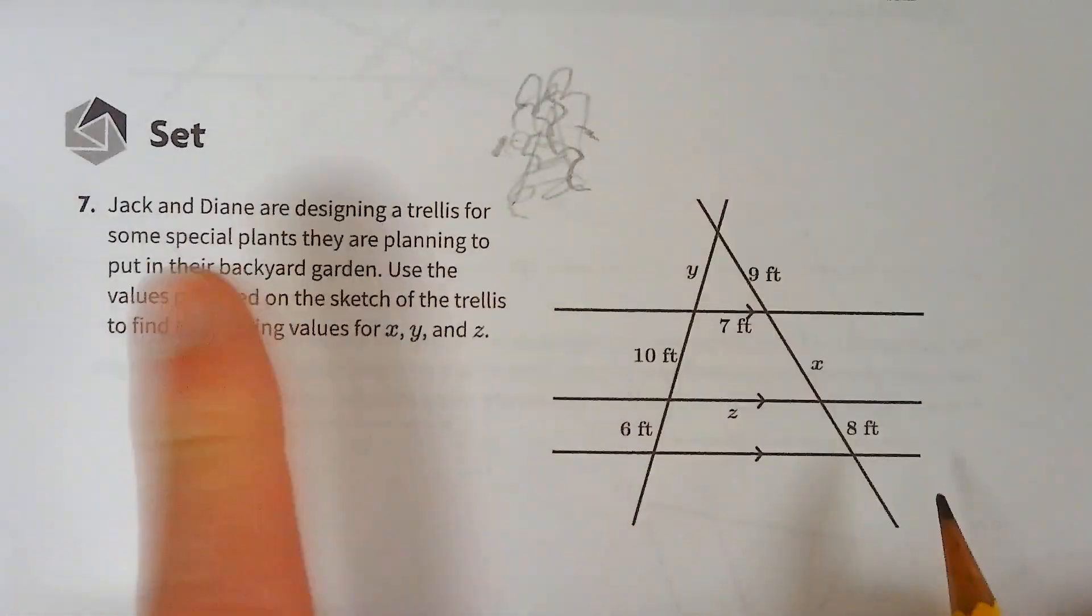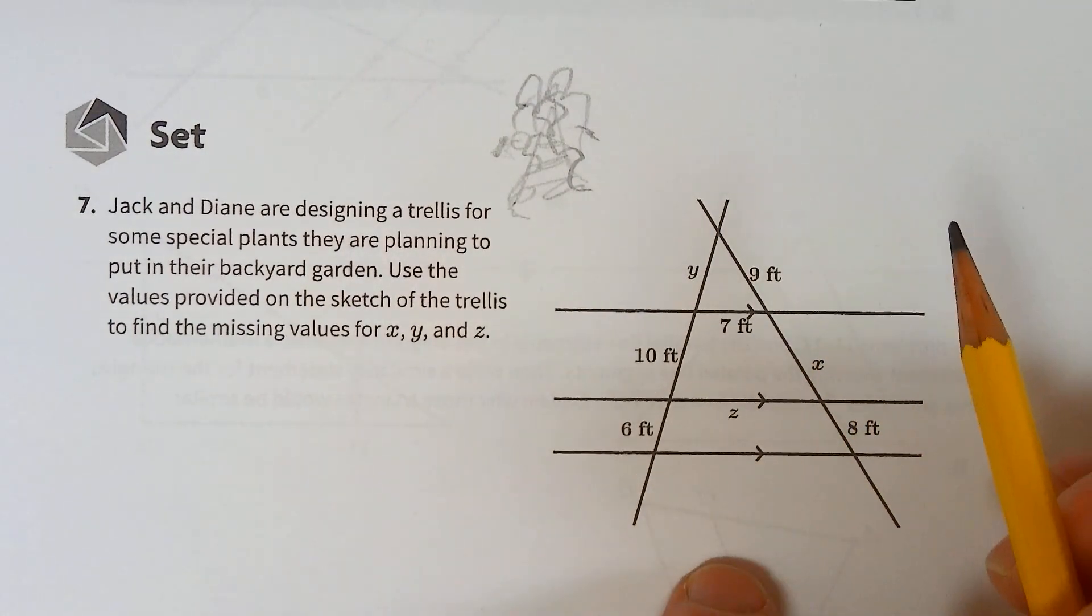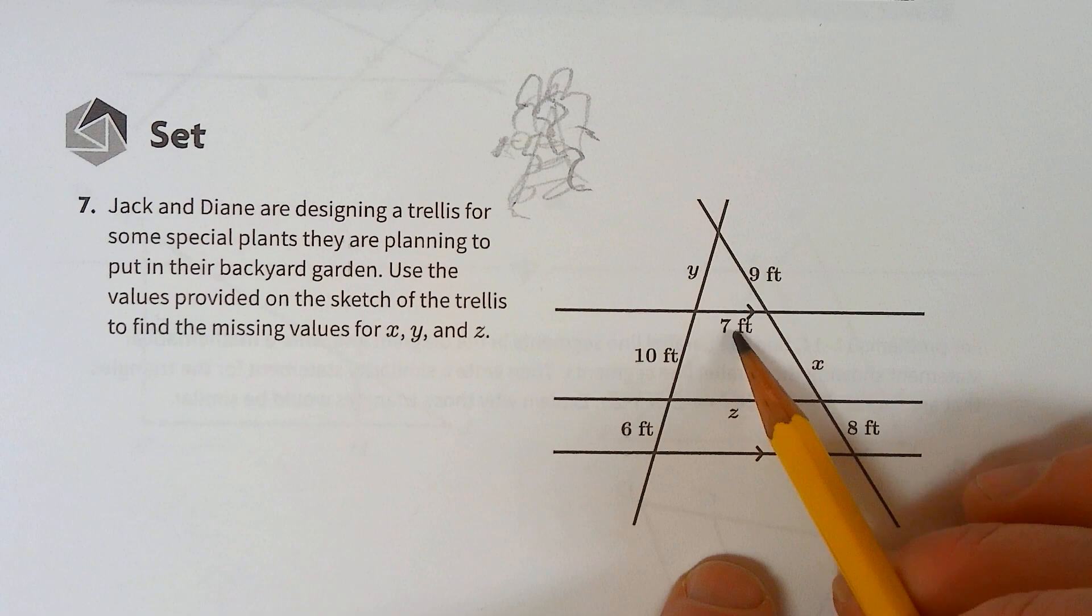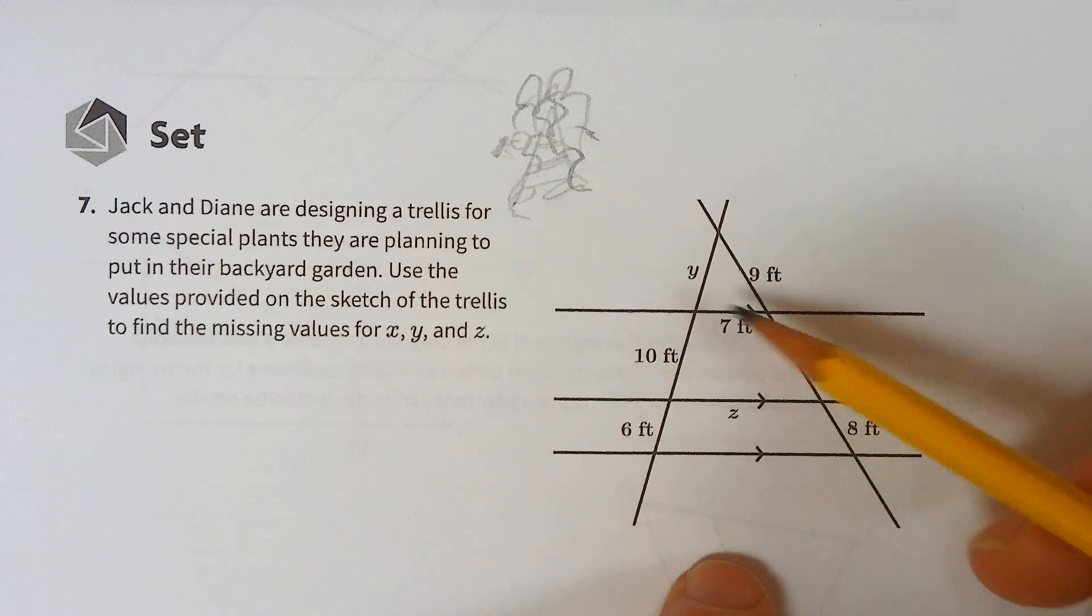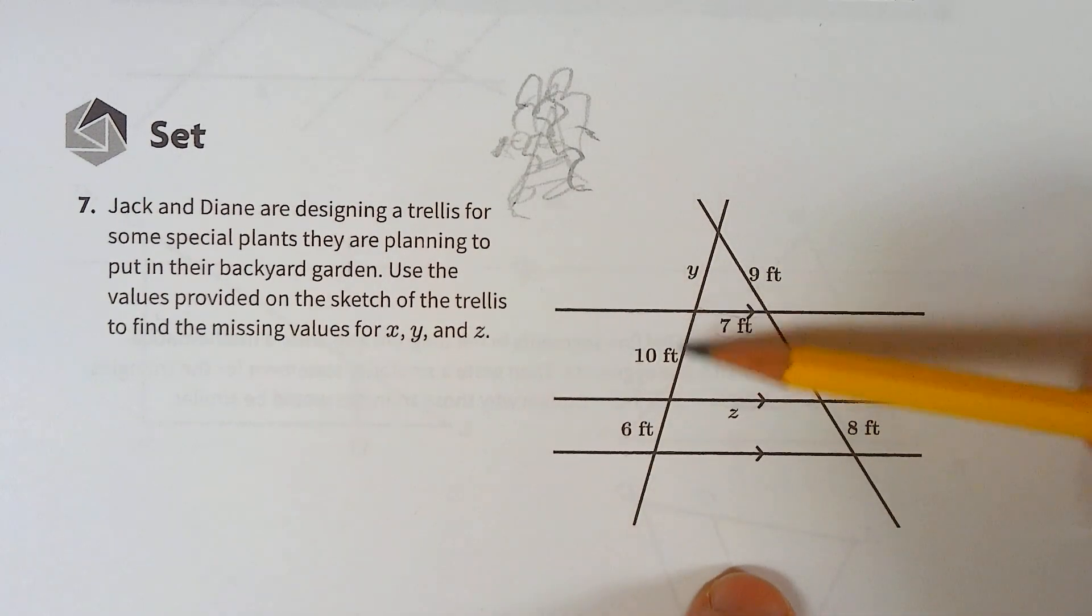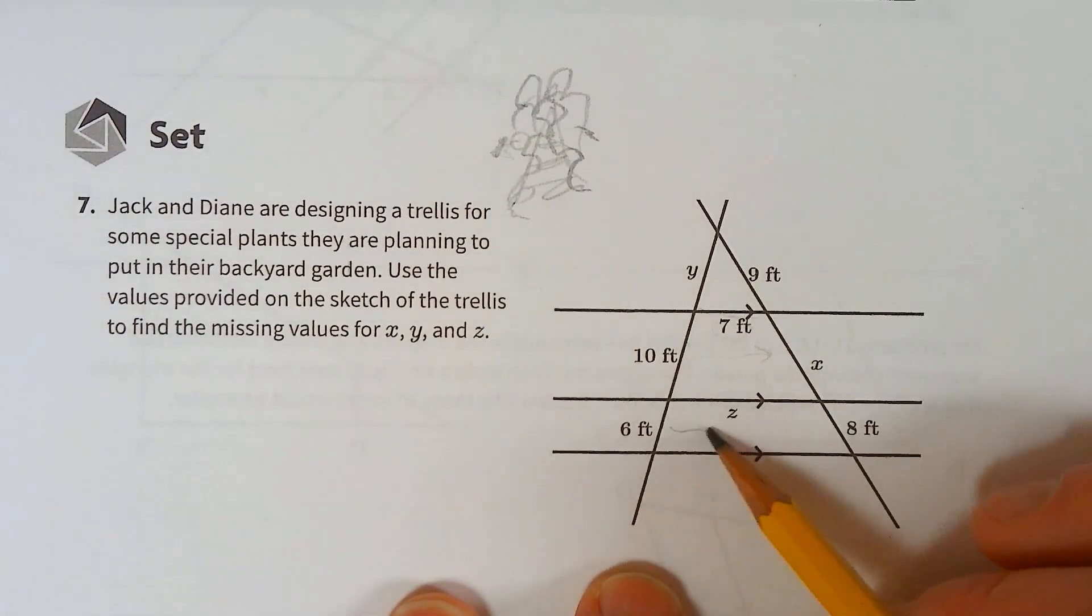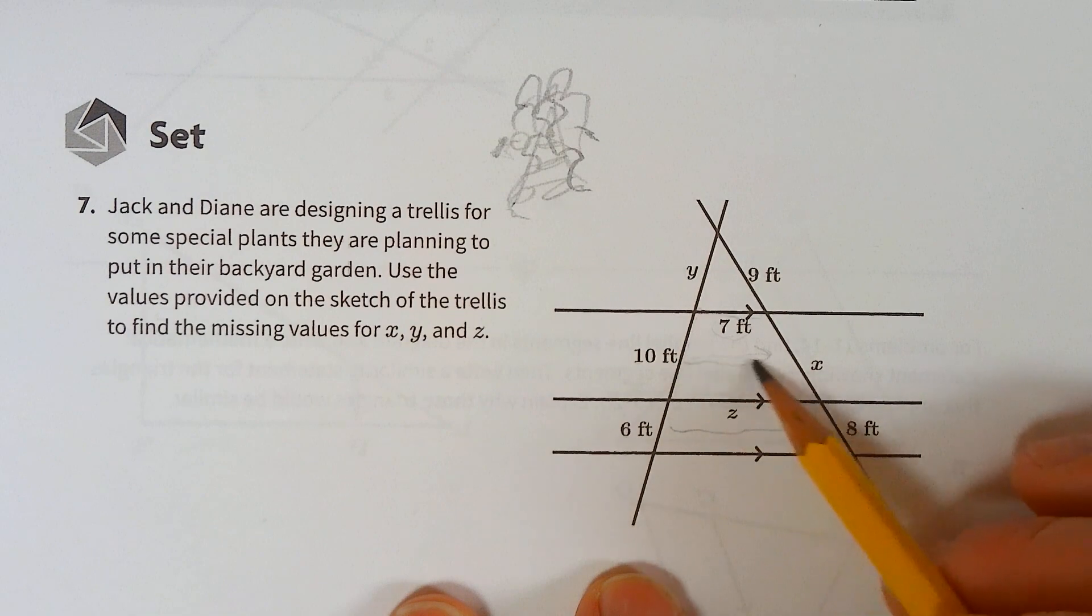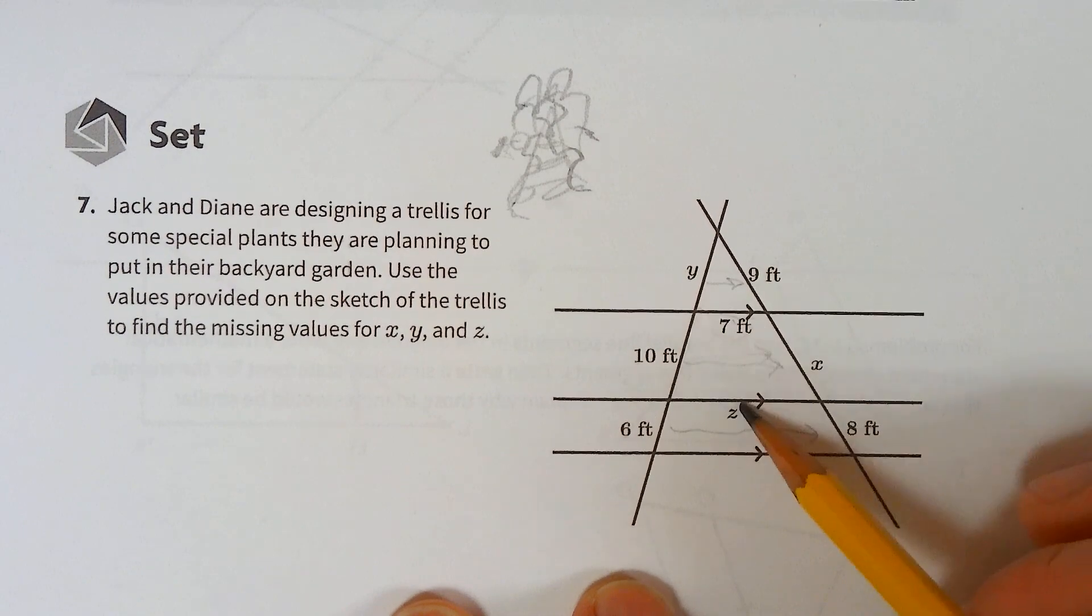So you're going to use the proportions. Make sure that if you use the 7, you're only comparing it to other full end lengths. Like, you can't - the one thing you can't do is use the 7 and a chunk. You can use chunks.